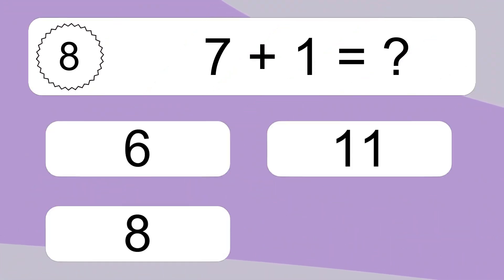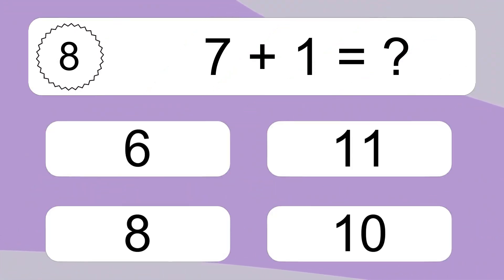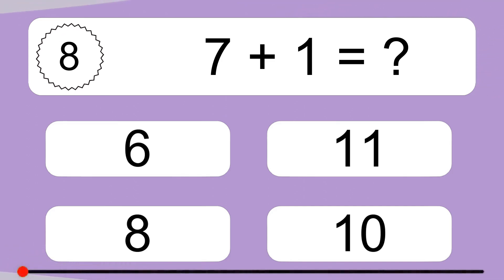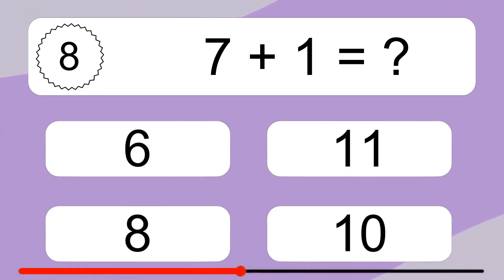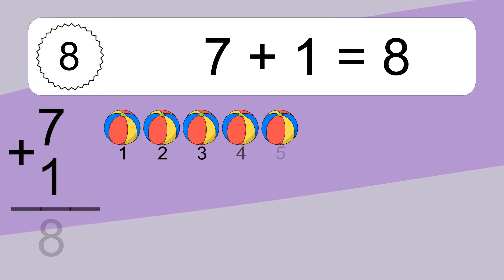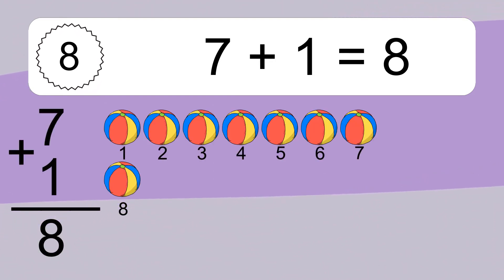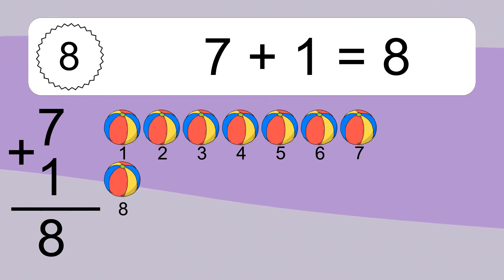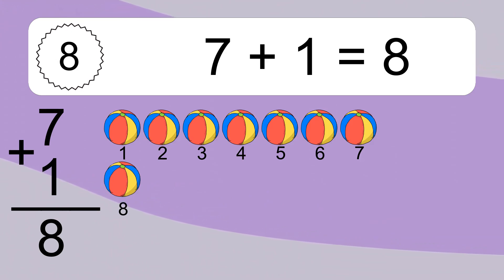7 plus 1 equals what? 7 plus 1 equals 8. Let's count it. 1, 2, 3, 4, 5, 6, 7, 8.